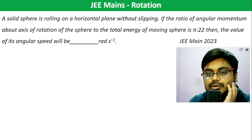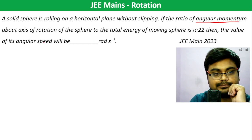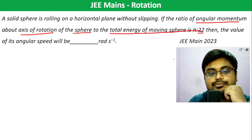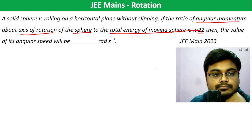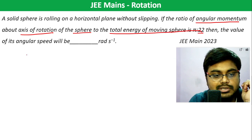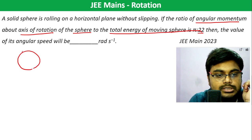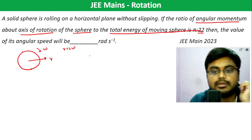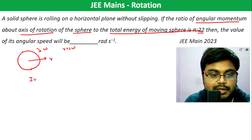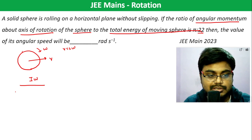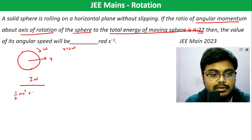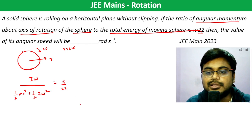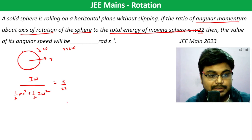A solid sphere is rolling on a horizontal plane without slipping. The ratio of angular momentum about the axis of rotation of the sphere to the total energy of the moving sphere is π/22. Find the value of its angular speed. For a solid sphere rolling without slipping, v = rω. The ratio of angular momentum about the axis — Iω — divided by total energy (½mv² + ½Iω²) equals π/22.